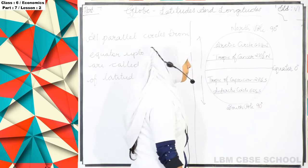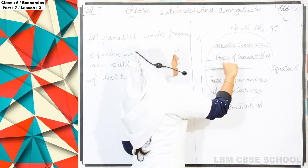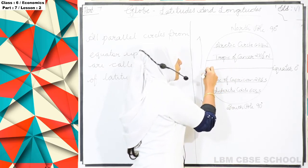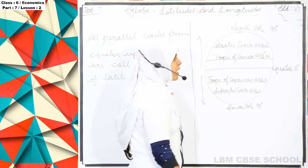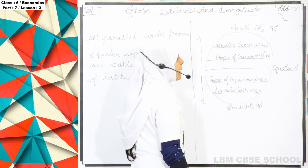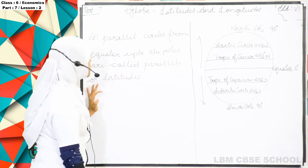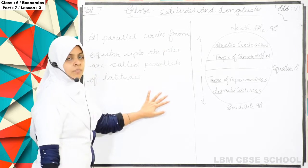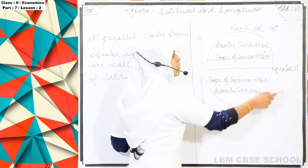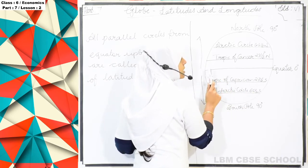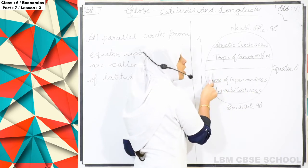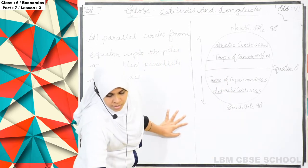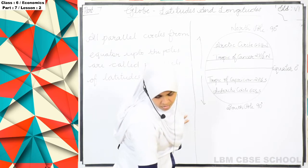The line we can see in the middle of the earth is known as the equator. The equator, at 0 degrees, is the imaginary line in the center of the globe that divides the earth into two equal halves — the Northern Hemisphere and the Southern Hemisphere.